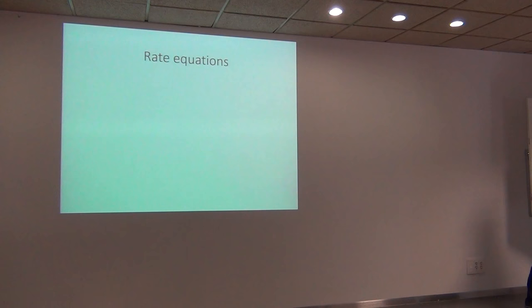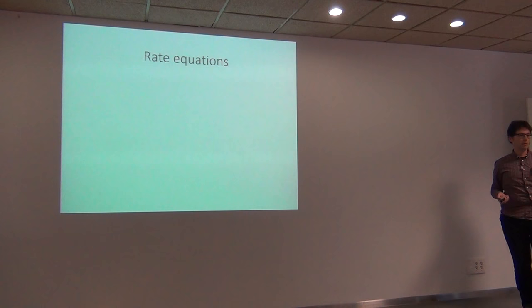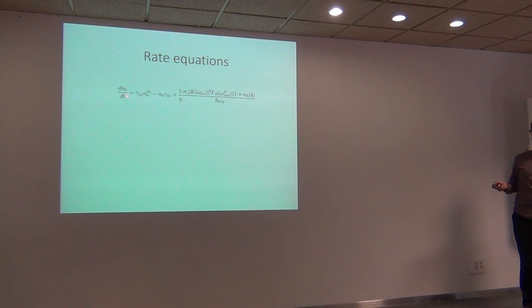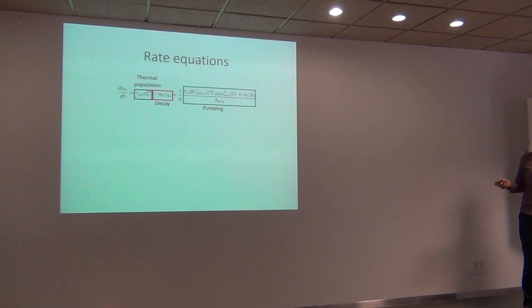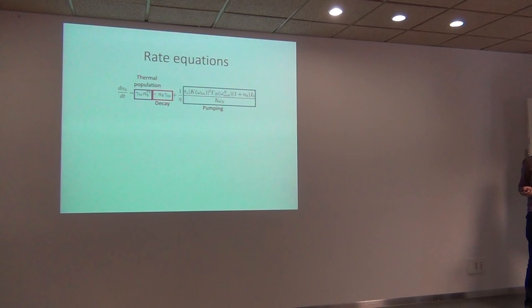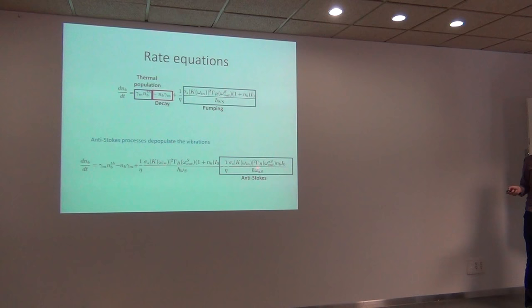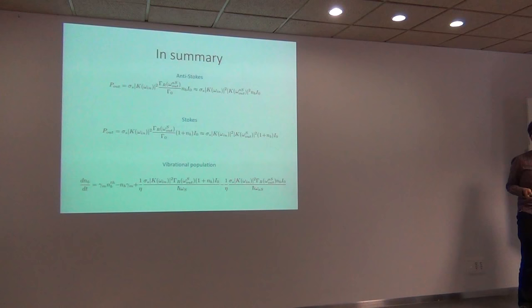I'll describe the phonon/vibrational population using rate equations. The population depends on how much thermal processes populate the system; you have a decay rate and pumping from the Stokes photons. The advantage of this expression is you can look at the dynamics, and it's clear that something is missing: the Stokes processes are populating the system, but the anti-Stokes will depopulate. This is usually much weaker, but we are reaching regimes where this becomes important and must be considered.